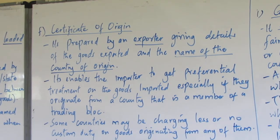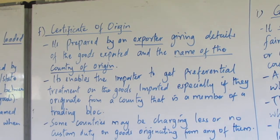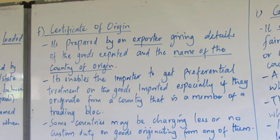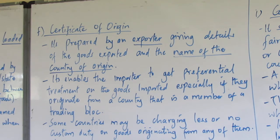In the previous lesson we discussed the first five documents of trade, which are letter of credit, import license, bill of lading, indents, and the policy or certificate of insurance.